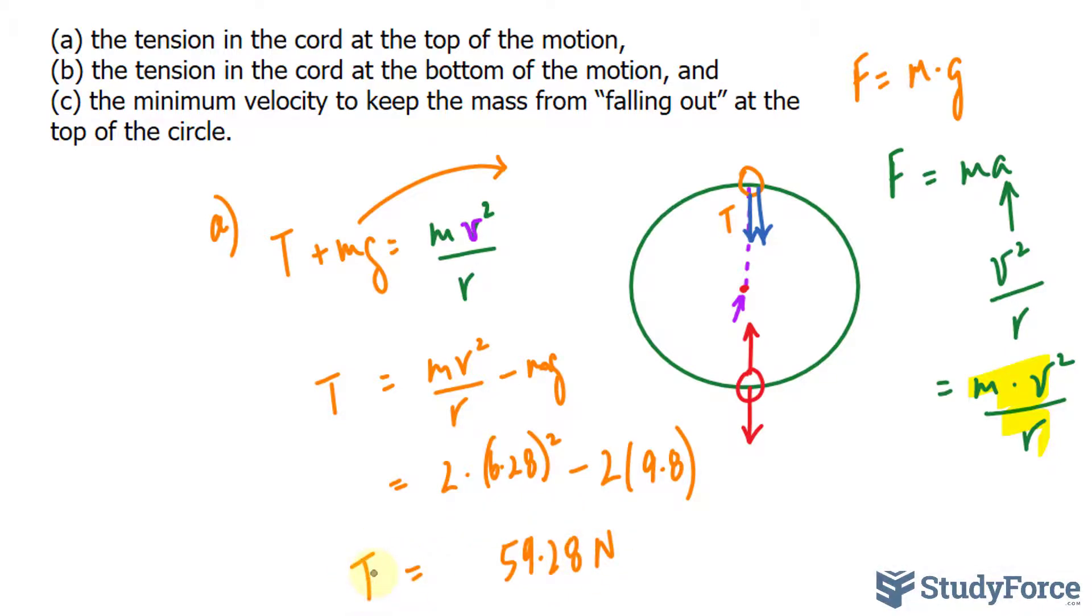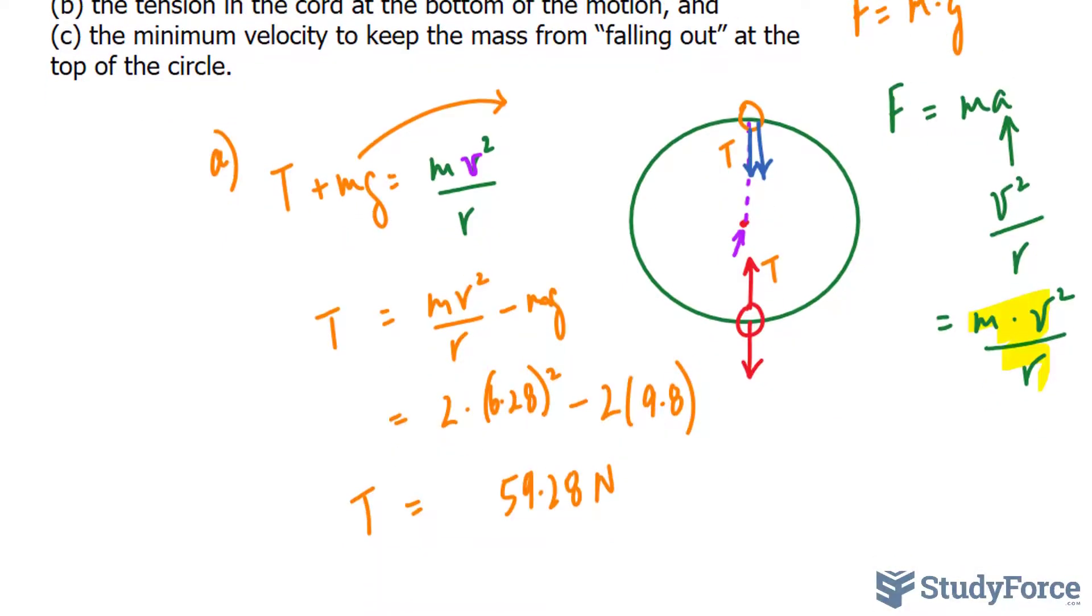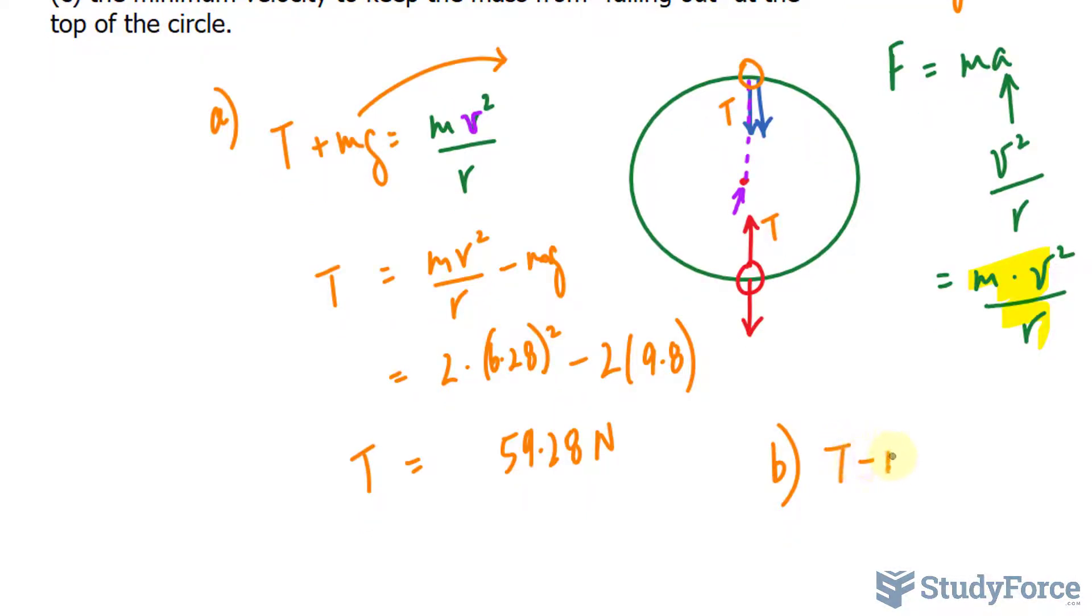For question B, the tension in the cord at the bottom of the motion. Remember this time, the tension is going upwards, and it's actually going in the opposite direction of the force of gravity. So how do we deal with that? Instead of adding the two forces, we will subtract them. So I have T minus mg is equal to mv to the power of 2 over r.